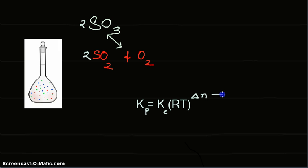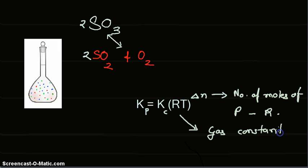Delta n is the change in number of moles—that is, the number of moles of products minus reactants. R is the gas constant, which is fixed. T is the temperature, and by substituting these values, we will first find the change in number of moles.